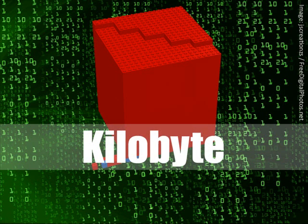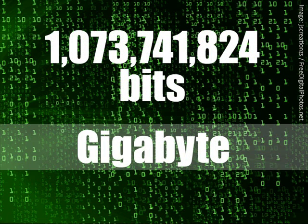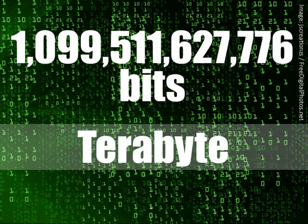1,024 bytes of information is called a kilobyte. 1,048,576 bits equal 1 megabyte. 1,073,741,824 bits equal 1 gigabyte. 1,099,511,627,776 bits equal 1 terabyte.